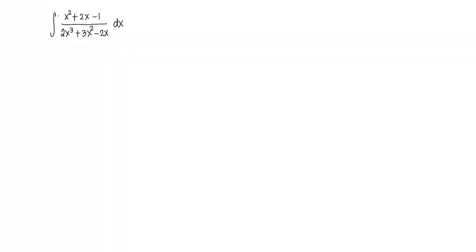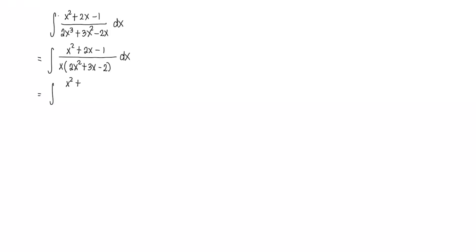Next, we factor the denominator. What's common is x, giving us x squared plus 2x minus 1 over x times 2x squared plus 3x minus 2 dx. Factoring the trinomial further — if it's factorable, it yields two linear factors, two binomials. Factoring the trinomial gives us 2x minus 1 times x plus 2 dx.